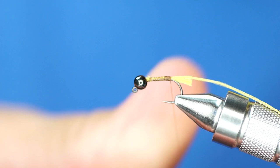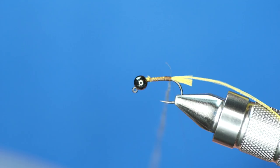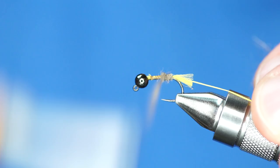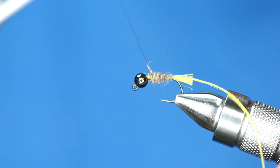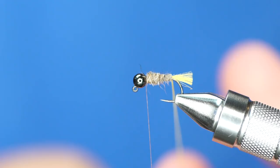The body is just going to be Nature Spirit Snowshoe Rabbit. I'm just going to wrap up kind of a tapered body. Nice and buggy. So about right to there.